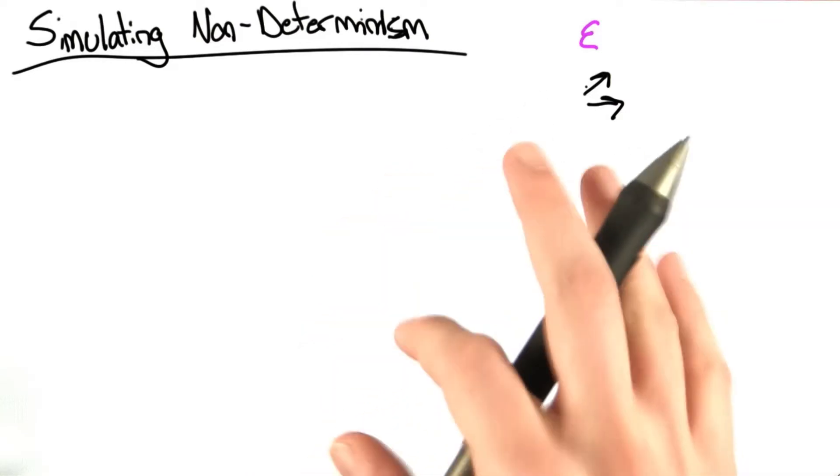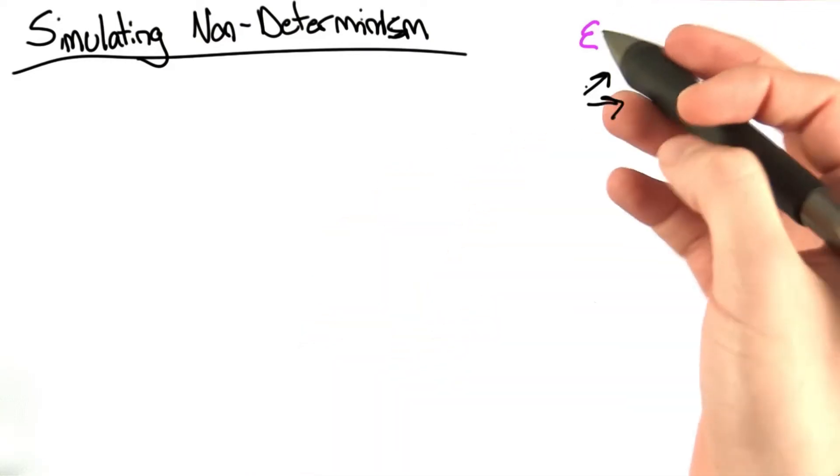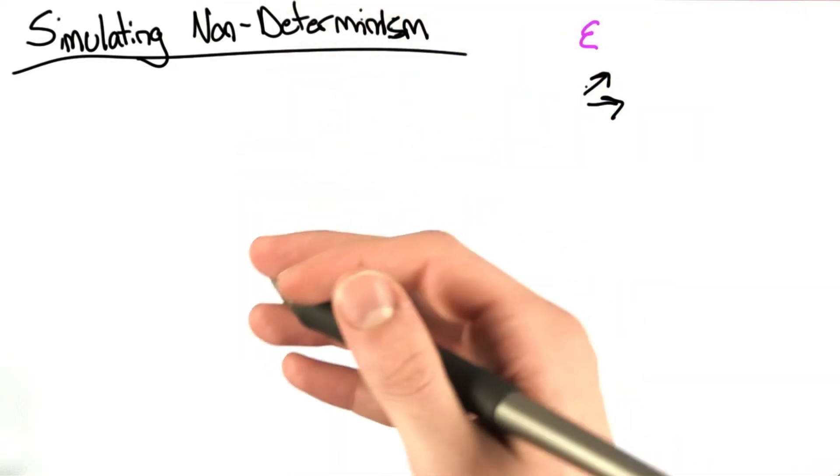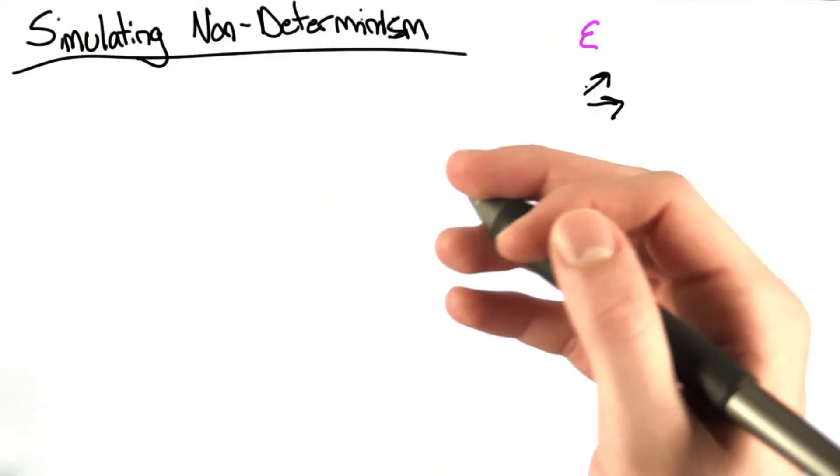And so that's really the key, what we're going to have to modify for this problem since we were told explicitly we do not have to worry about the epsilon transitions. The first thing we may want to go over is a notation in Python code for our machine.